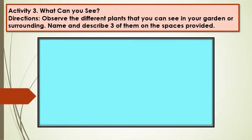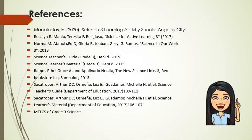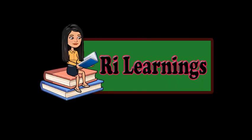Activity 3: What can you see? Observe the different plants that you see in your garden or surrounding. Name and describe them on the spaces provided. Give at least 3 plants in your surrounding or in your garden.